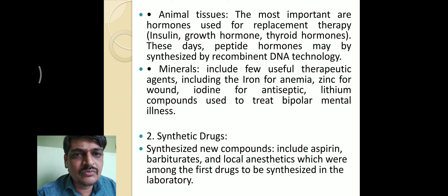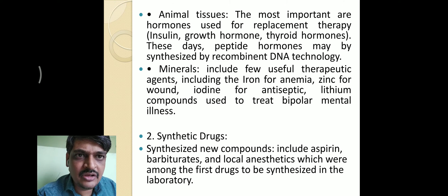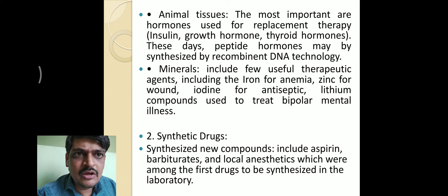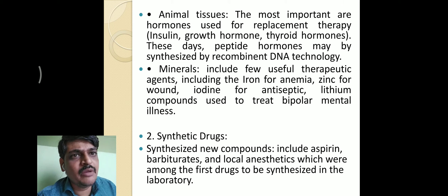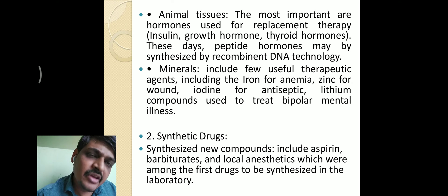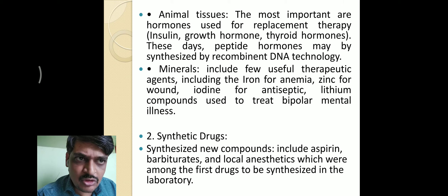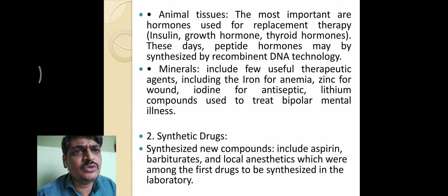Animal sources or animal tissues provide important hormones. For example, insulin is used in the treatment of diabetes mellitus. In cases of insulin secretion deficiency by the pancreas, replacement therapy uses insulin obtained from animals and injected into the body to maintain insulin levels. Other examples include growth hormones and thyroid hormones — drugs from animal sources used to treat disorders.